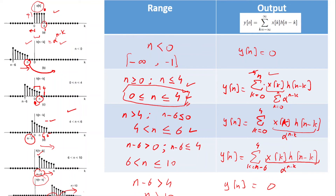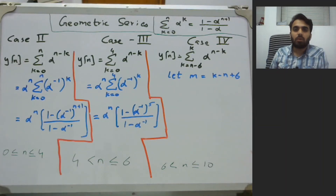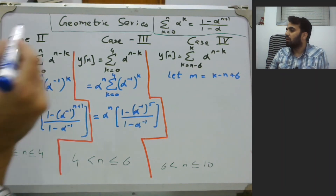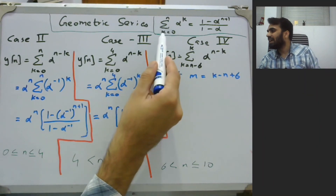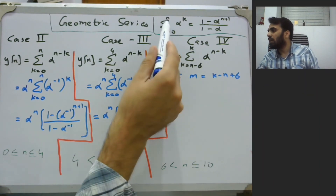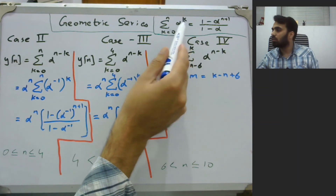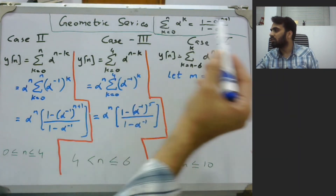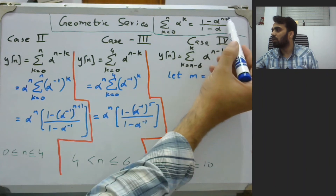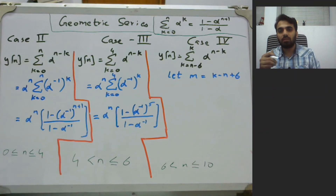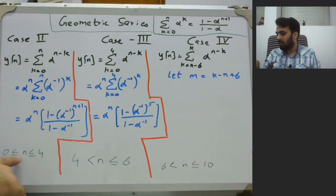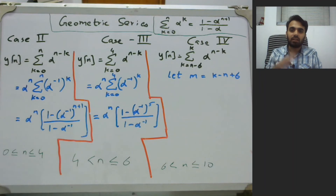We will simplify all these summations to find closed-form expressions using the geometric series formula: the sum from k=0 to n of α^k equals (1 − α^(n+1)) / (1 − α).